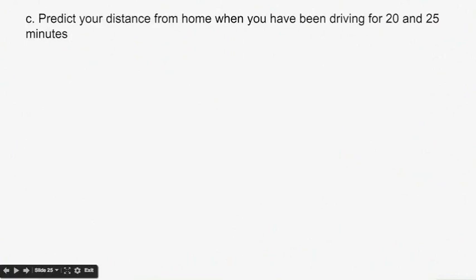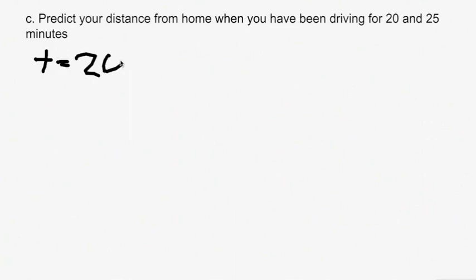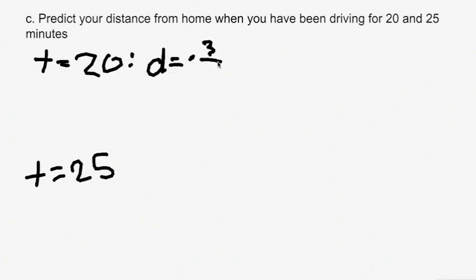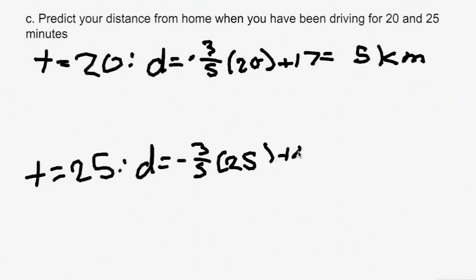Part C asks us to predict your distance from home when you've been driving for 20 and 25 minutes — find D when T equals 20 and T equals 25. When T equals 20: D equals negative 3 fifths times 20 plus 17, which gives 5 kilometers. When T equals 25: D equals negative 3 fifths times 25 plus 17, which equals 2 kilometers.